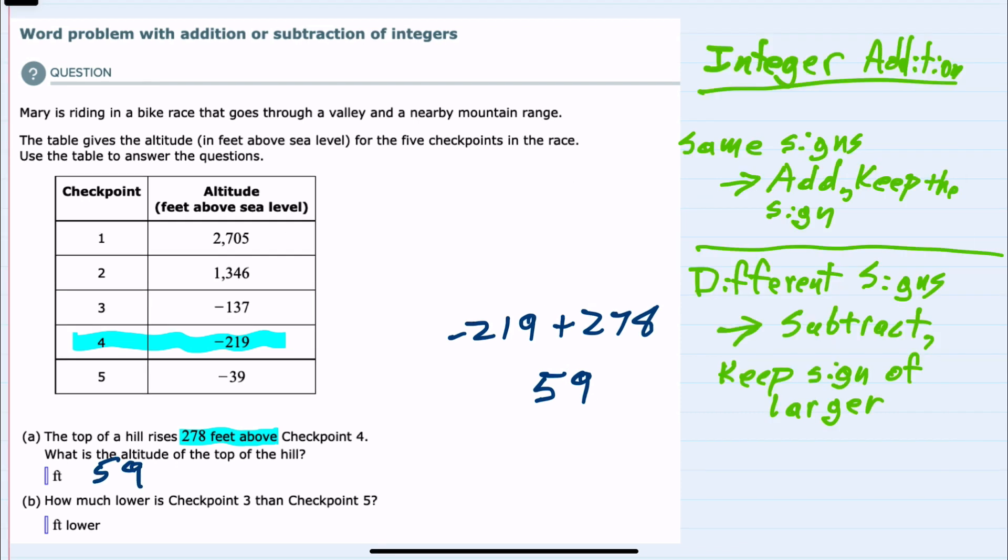If it's helpful, over to the side here I've written our rules for integer addition that say when the signs are the same we add and keep the sign. In this case we had different signs so we subtracted and kept the sign of the larger.